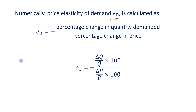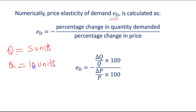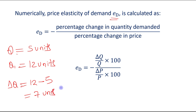When I say original price, it means for example, if Q is 5 units and Q1 is 12 units — this is the original quantity demanded and this is the new quantity demanded. If I want to find the change in quantity demanded, change is always calculated as final value minus initial value. So final value is 12 units minus initial value 5 units, so the change is 7 units. So percentage change in quantity demanded will be calculated as 7 upon 5 into 100. The same logic will be applied in the case of percentage change in price.